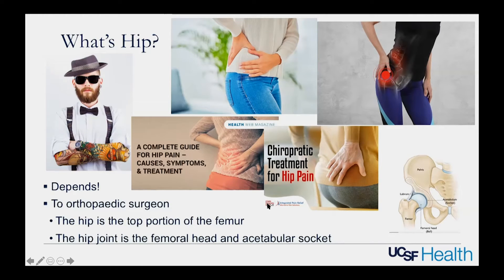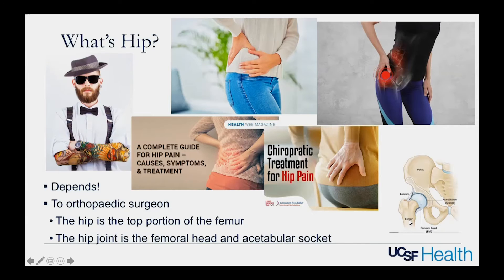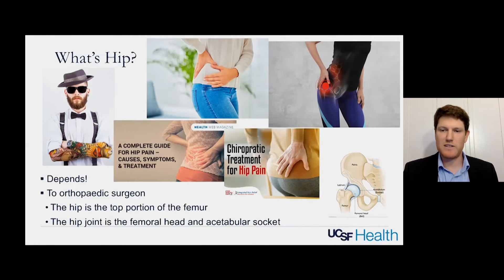When an orthopedic surgeon is talking about the hip, we're talking about the top portion of the femur — the femoral neck, the intertrochanteric region, and the upper part of the femur. That is technically what the hip is. And the hip joint is the ball and socket joint: the ball here and the socket, the acetabulum — that's what a hip is to an orthopedic surgeon.